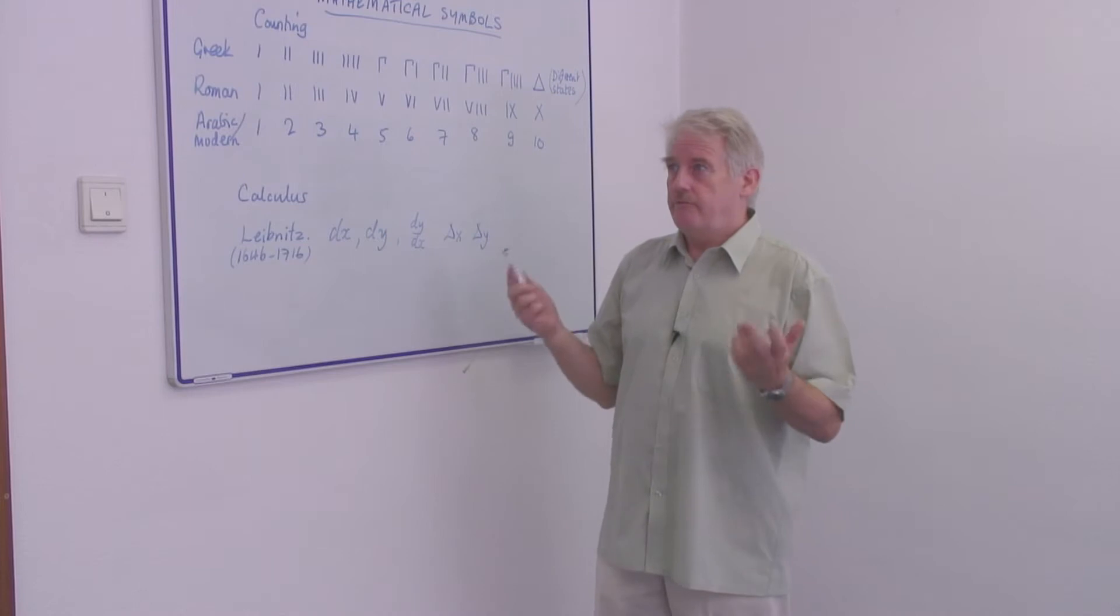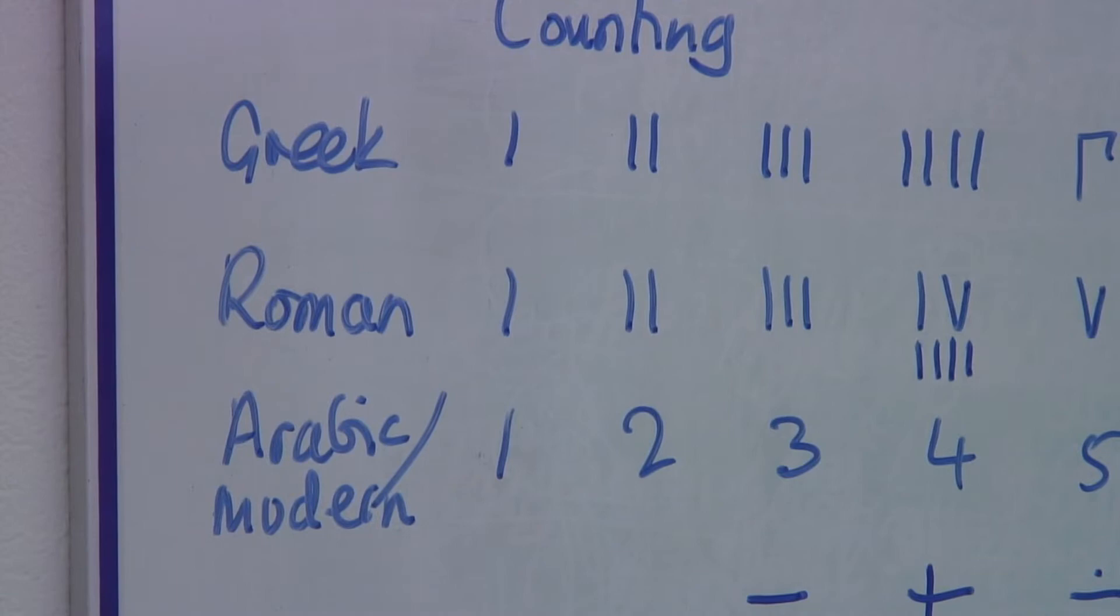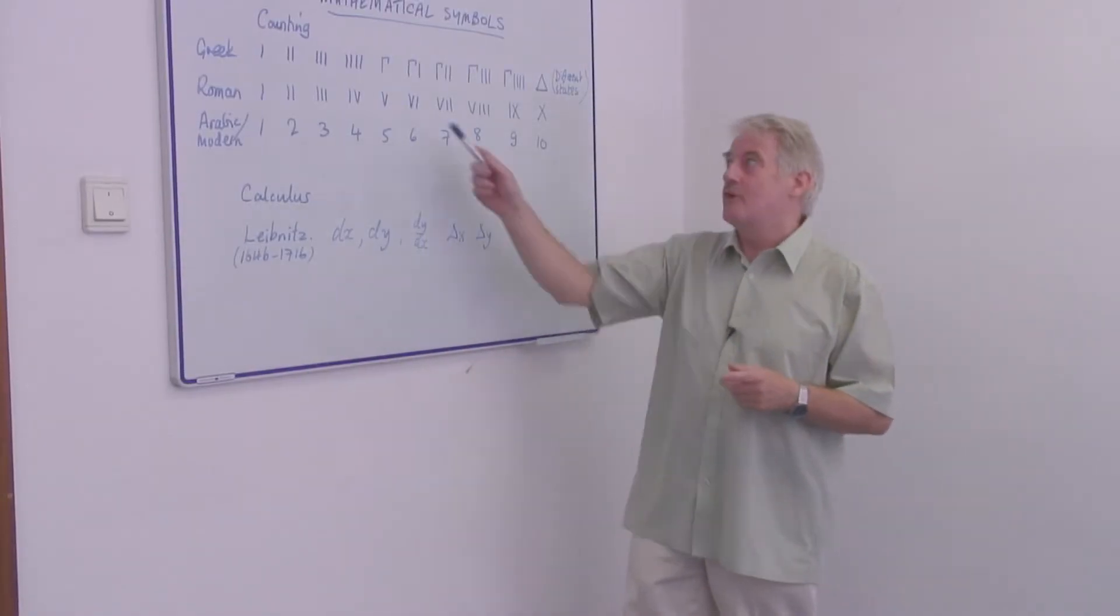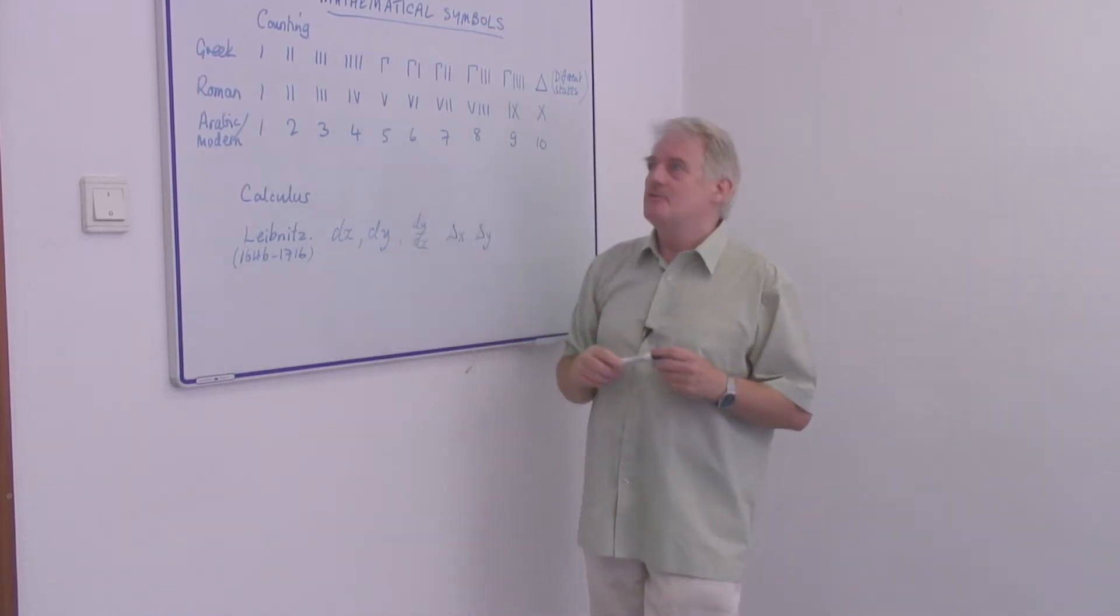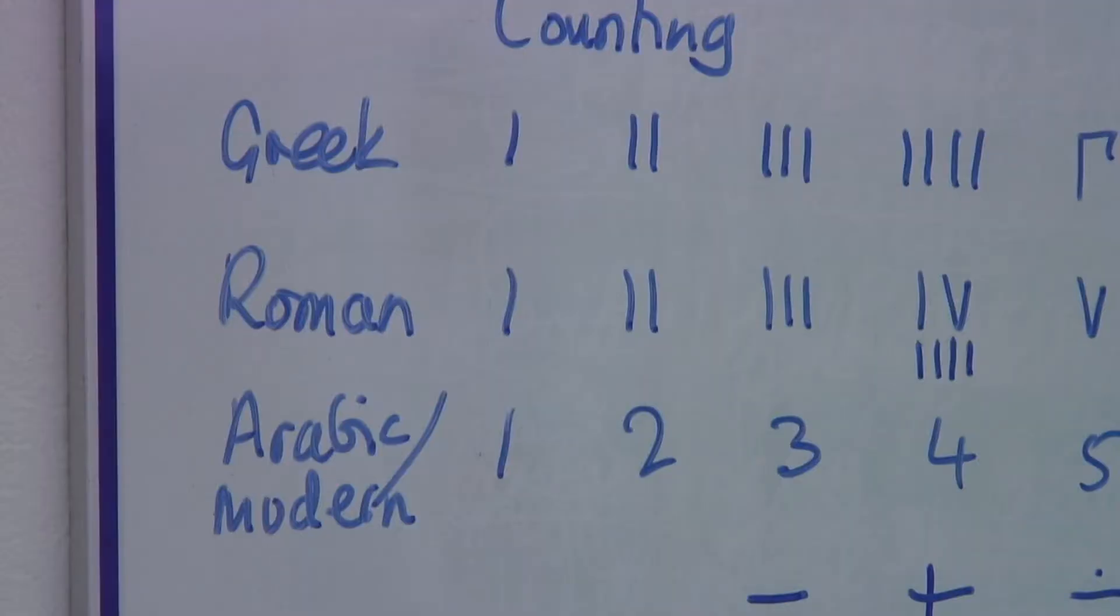Fairly obviously the Greeks and Romans came up with similar systems. Not altogether surprising since most Romans also spoke Greek, or educated Romans spoke Greek. So here the symbols are simple representations.